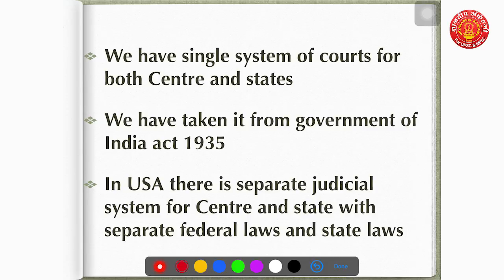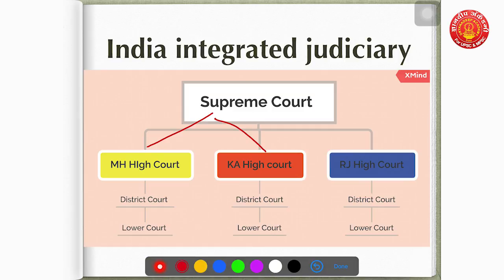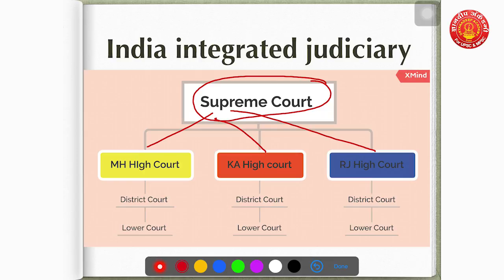This can be explained through a diagram. There is one single Supreme Court. In Maharashtra, for example, there is a subordinate court, then a lower court, then a district court, then a High Court — the same hierarchy exists in Karnataka, Rajasthan, and all other states. Appeals from every state's High Court go to the Supreme Court, meaning cases from all states are integrated at the central Supreme Court.